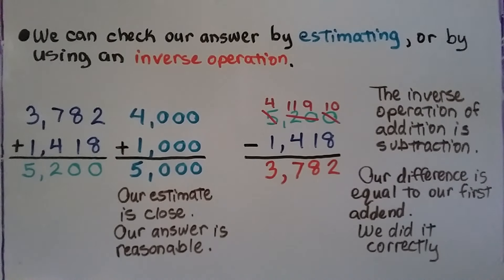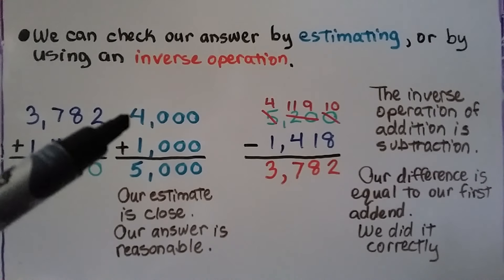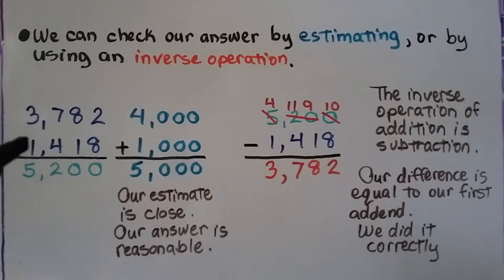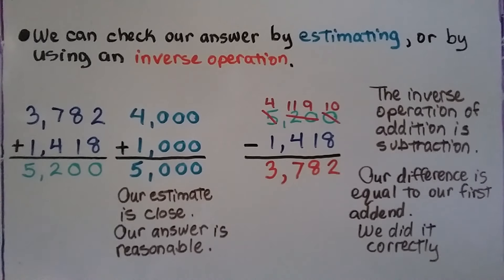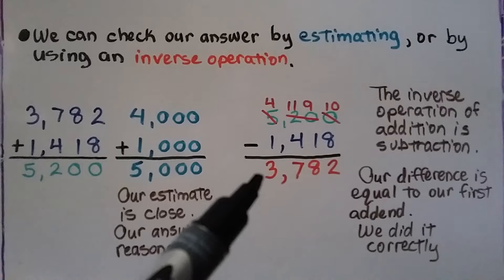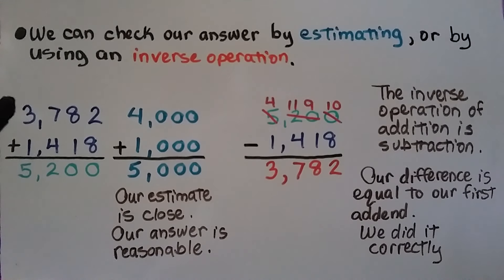We can check our answer by estimating or by using an inverse operation. This 7 tells the 3 to go up to a 4, so it rounds to 4,000. This 4 tells the 1 to stay the same, so it rounds to 1,000. 4,000 plus 1,000 equals 5,000 — our estimate is close, so our answer is reasonable. Because this is addition, we can use subtraction as our inverse operation. If we get the original first addend as our difference, we know we did it correctly.